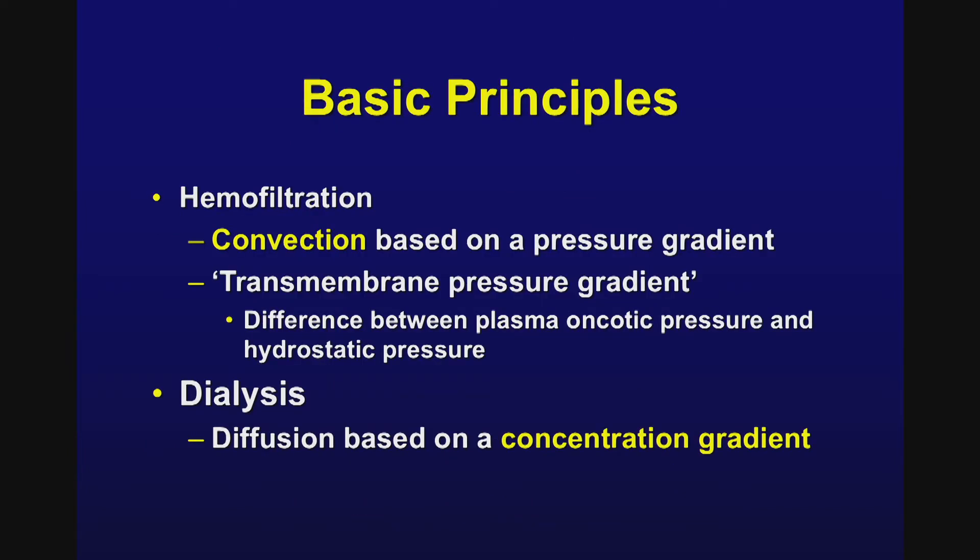The basic principles of hemofiltration are based on convection, or a pressure gradient — like a leaf blowing down the road via wind. Solute movement is based on the transmembrane pressure gradient, which is the difference between plasma oncotic pressure (the pressure generated by blood proteins keeping fluid inside the vascular space) and hydrostatic pressure pushing solute outside the intravascular space into the canister collection side. Dialysis, by contrast, is diffusion-based — solute moves from high concentration to low concentration to achieve equilibrium.